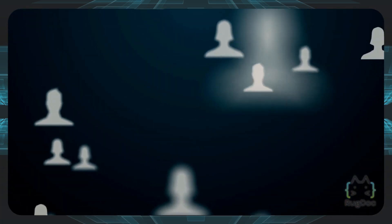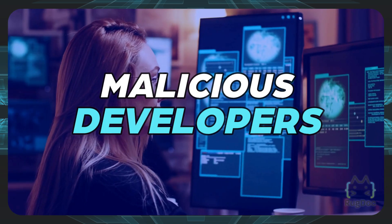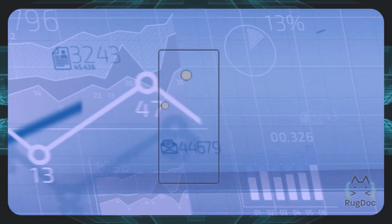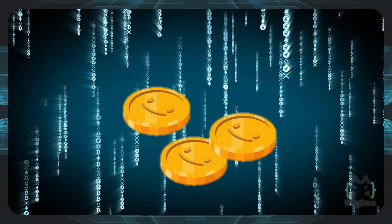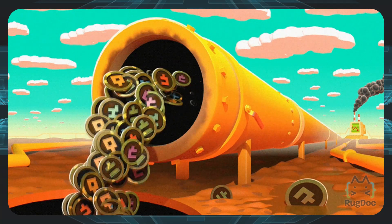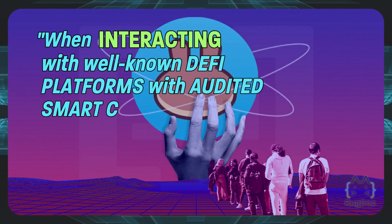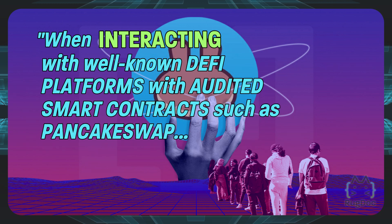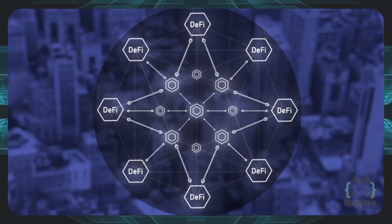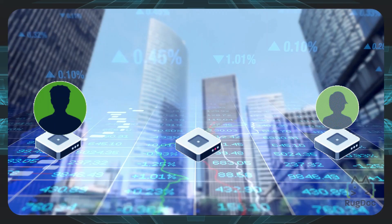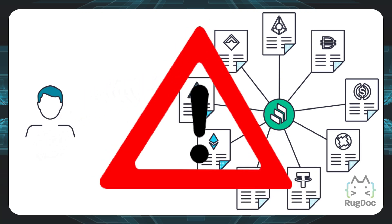Many users have lost their assets because they weren't aware about backdoors that were placed in smart contracts by malicious developers. What often happens is that such platforms ask the users for permission to spend an unlimited number of tokens — and not just the amount that you set. When interacting with well-known DeFi platforms with audited smart contracts such as PancakeSwap, users typically don't have to worry too much about this. However, in the case of recently launched DeFi platforms which haven't been audited or reviewed by RugDoc, users should be aware of the risks.